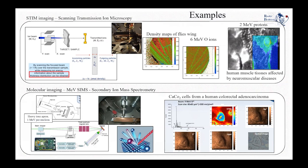One needs to mention that regarding the SIMS technique, the mass spectra obtained are typically very rich and the identification of each of these secondary produced ions is not very straightforward — it is still under research.